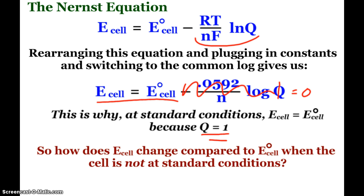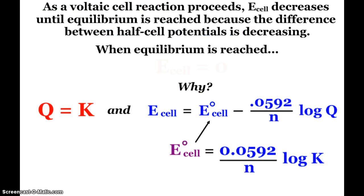So how does our cell potential change compared to our standard when the cell is not at those standard conditions? Well, as a voltaic cell proceeds, the cell voltage is actually decreasing until equilibrium is reached, essentially because if you think of, like, our cell potentials as on a number line, the absolute value, the difference between our potentials, is decreasing. And when we reach equilibrium, the cell voltage actually becomes 0. And you can see that experimentally, but you can also see that through the Nernst equation.